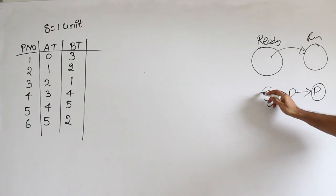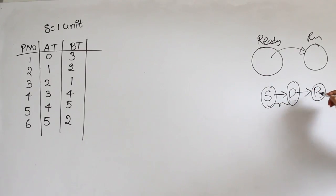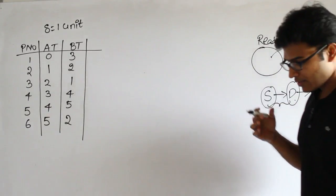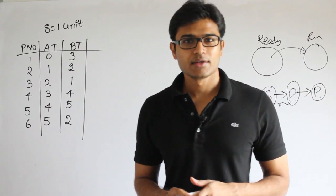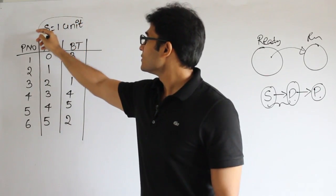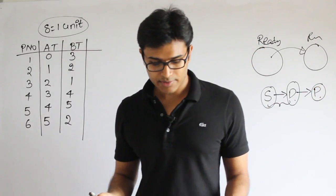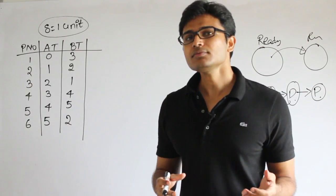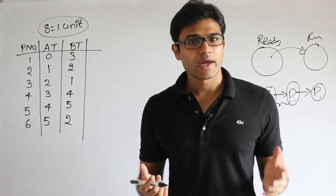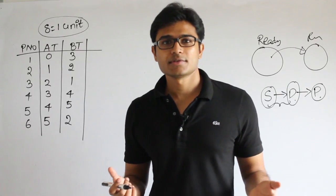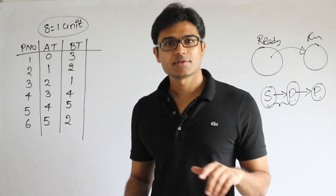Once a process is over, the scheduler is called, which calls the dispatcher, and finally the dispatcher makes the next process available for running. For this entire procedure, some time is wasted by the CPU. Generally, GATE questions don't specify this overhead, but since this question has specifically mentioned it, we will account for it here. In all other questions, do it the normal way.